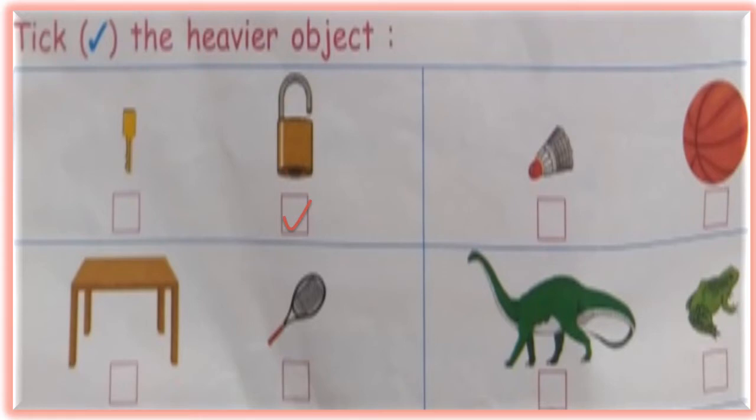See the second, third and fourth pictures. Here, ball, table and dinosaur are the heaviest objects.